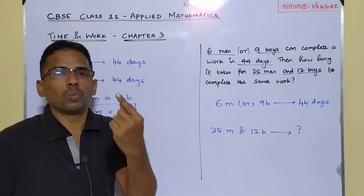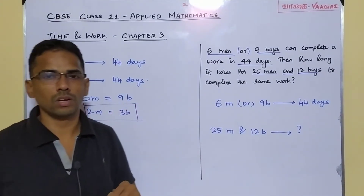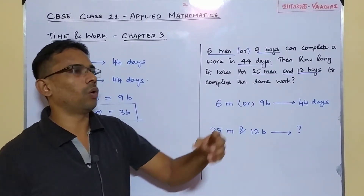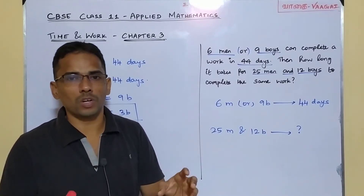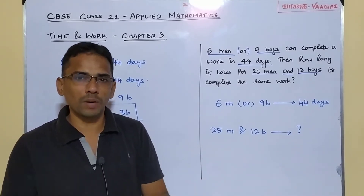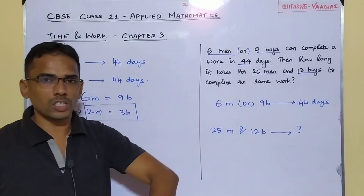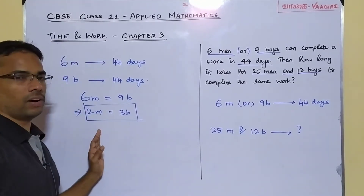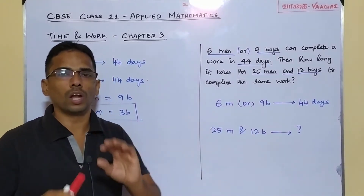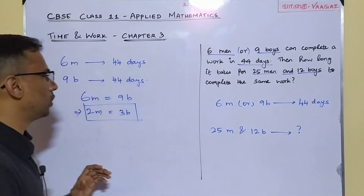If two men equals three boys, then one man equals three-halves boys, or 1.5 boys. Practically, you can't have 1.5 boys, but in terms of efficiency — the amount of work done per unit time — you can compare them. So two men's manpower is equivalent to three boys' manpower. Now the way to find the answer is going to be very simple.